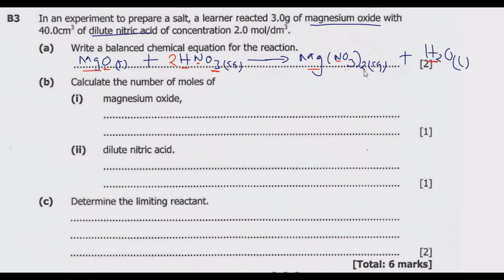Question (b): calculate the number of moles of magnesium oxide. We've been given the mass of magnesium oxide, so what is the number of moles that this represents? The number of moles n is given by mass divided by relative molecular mass — or molar mass when dealing with an element. In this case, since this is a compound, it is the relative molecular mass of magnesium oxide.